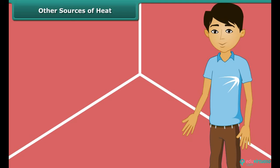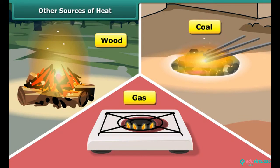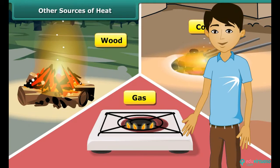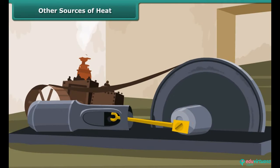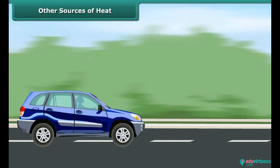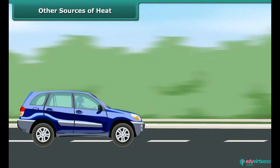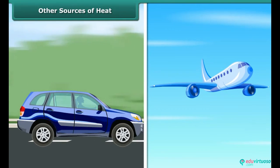Man can generate heat by burning wood, coal, and gas. Wood, coal, and gas are called fuels. Fuels burn in machines to make them work. A motor car runs by burning fuel; an aeroplane flies by burning fuel.